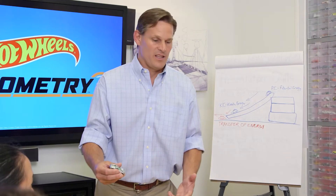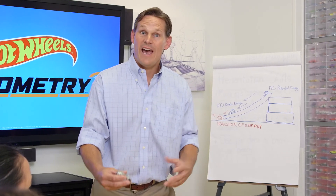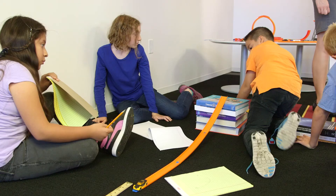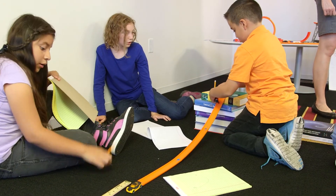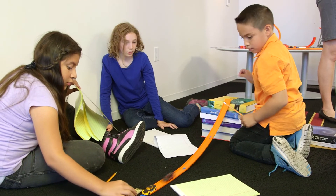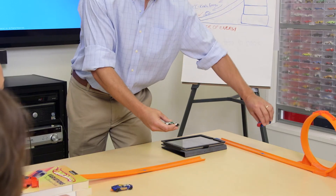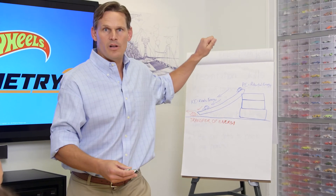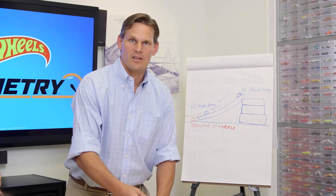You should also take the opportunity to model what students can do and then have them actually do it. For example, let's increase the number of books to five and then have students make predictions and estimate how far the transfer of energy would cause the car to move. You can have each group make an estimation, brainstorm together, put it on the board, and then actually model and do that in front of the class.